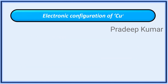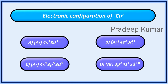What is the electronic configuration of copper? Options: A. [Ar] 4S1 3D10, B. [Ar] 4S2 3D4, C. [Ar] 4S1 3P5 3D5, D. [Ar] 3P3 4S1 3D10.